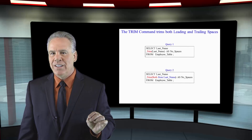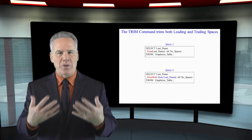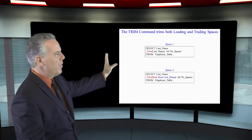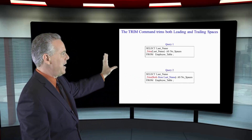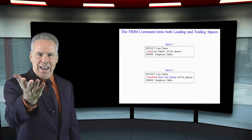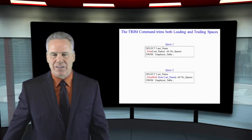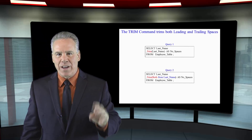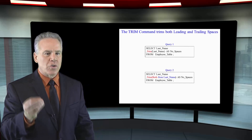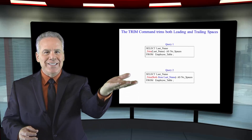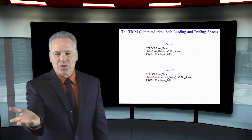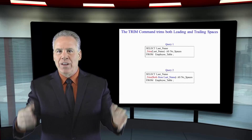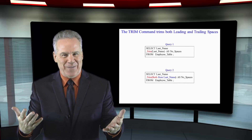I'm going to show you some amazing things with the TRIM command. Let's trim the last name with no spaces — that's the alias, no spaces. But when we trim here, you're going to trim any leading spaces or any trailing spaces. It's going to trim both by default.